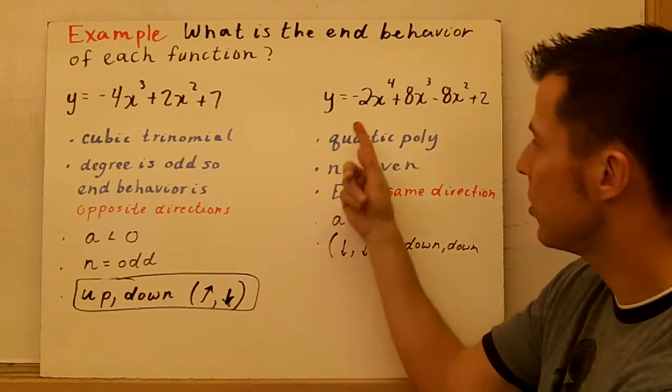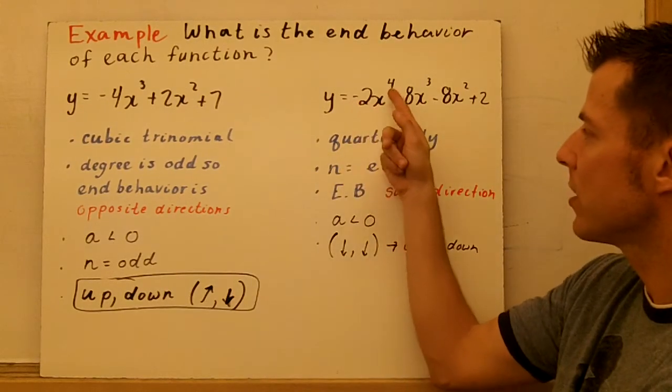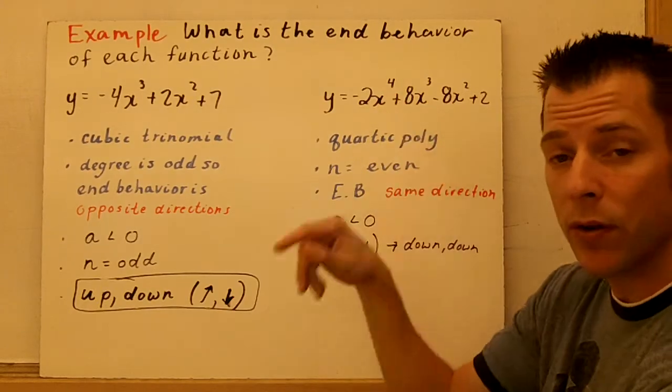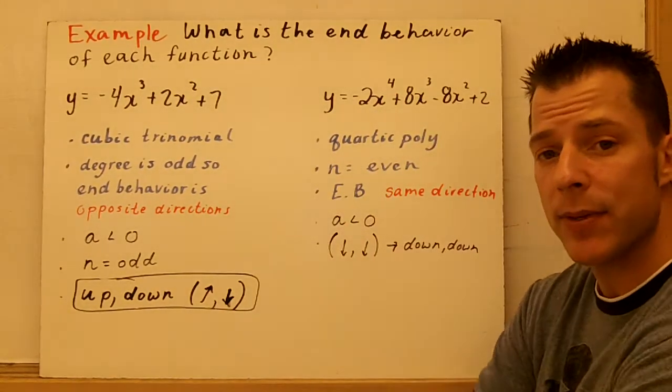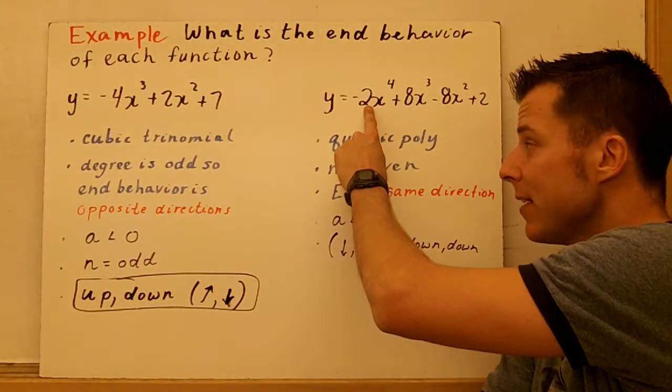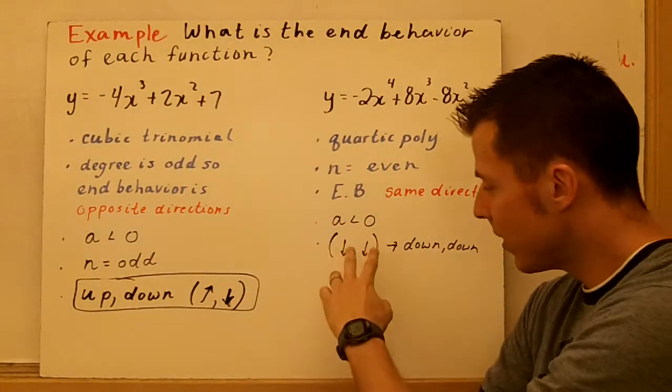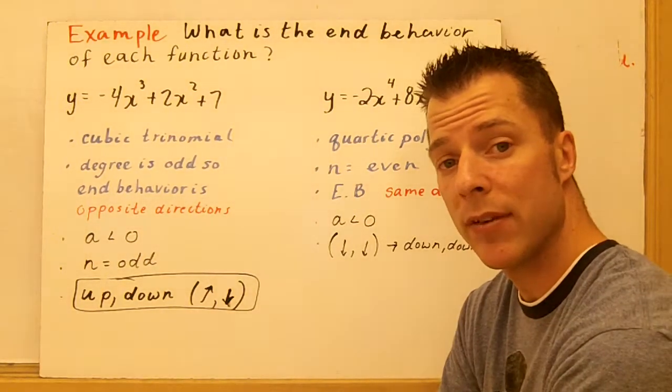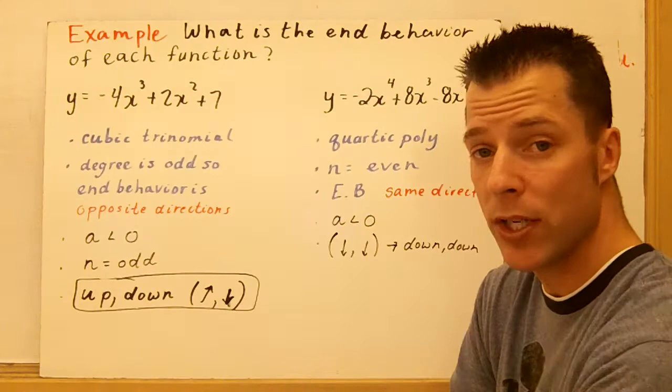The second one's much easier. All I'll do is -2x⁴. Who cares about the rest? I don't care degree 3, 2. This is a degree 4. So I know that my end behavior has to be the same direction. a is less than 0. It's negative. So that means the end behavior is down, down. So that's how to find end behavior looking at an equation.